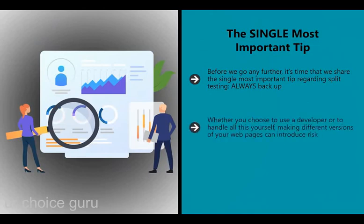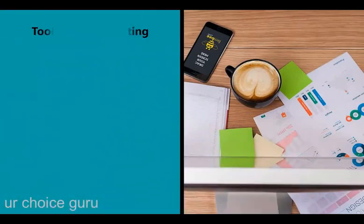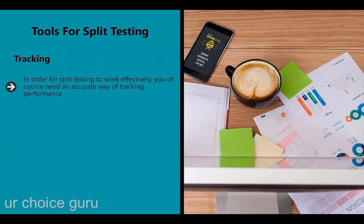Whether you choose to use a developer or handle this yourself, making different versions of your web pages introduces risk. This is especially true when using the include method or others that actually alter the content on the original version of the page. So make sure that you back up your site regularly and especially back up any pages you'll be tweaking. For split testing to work effectively, you of course need an accurate way of tracking performance - it's a good idea to invest in high-quality keyword tracking software that can show you your position in the SERPs for particular terms.